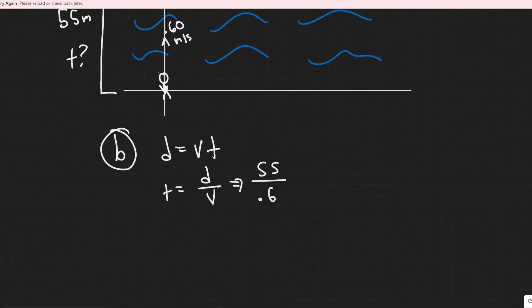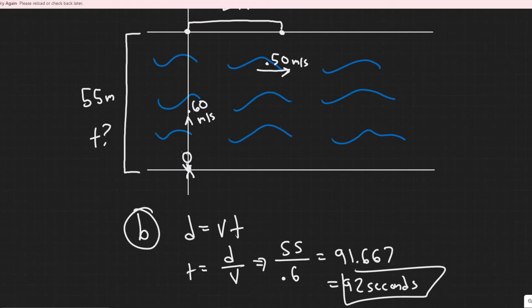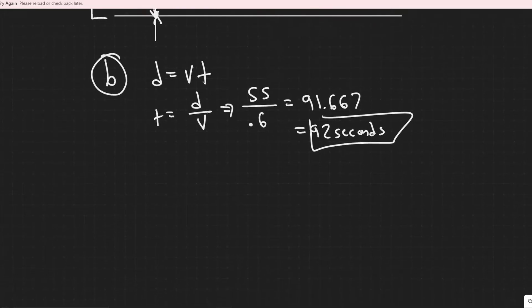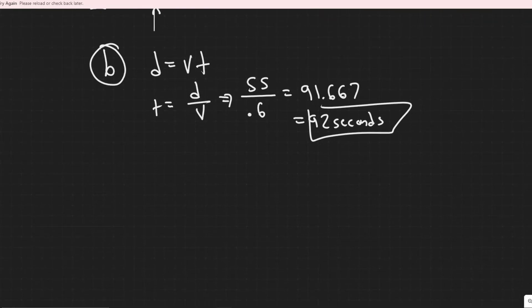And so the distance is 55 meters and her velocity in that direction is 0.6 meters per second. So you just divide 55 divided by 0.6 equals 91.667, so about 92 seconds. So it's going to be about 92 seconds is the amount of time it takes her to travel across to the other side.